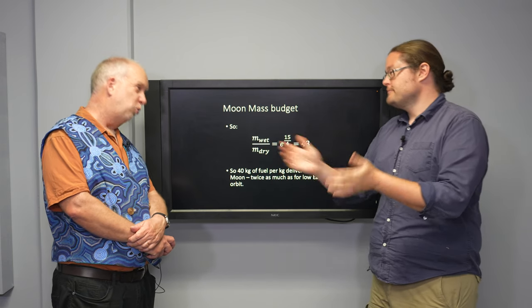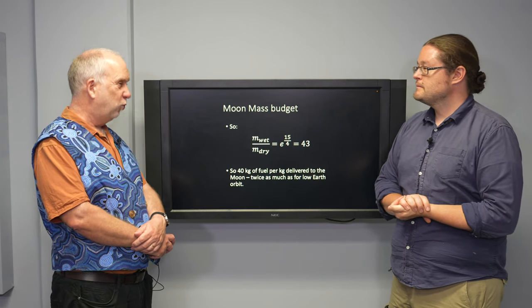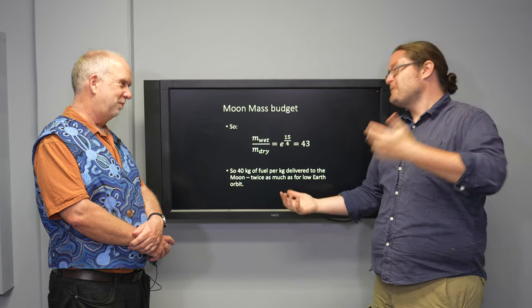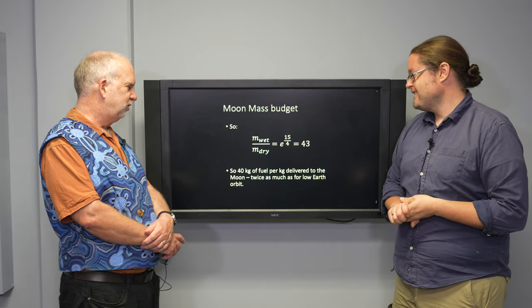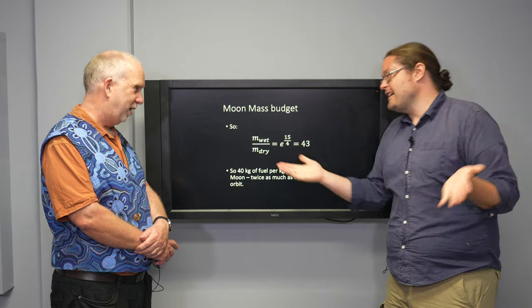Low Earth orbit, as we've calculated before, is about 20. So this is 40. It's about twice as bad. I mean, you kind of expect it. So that's not totally crazy.